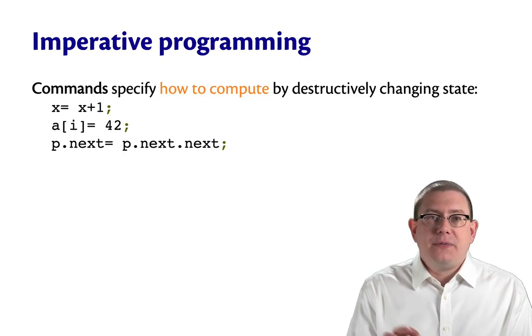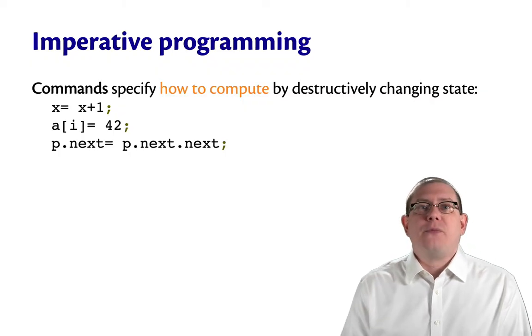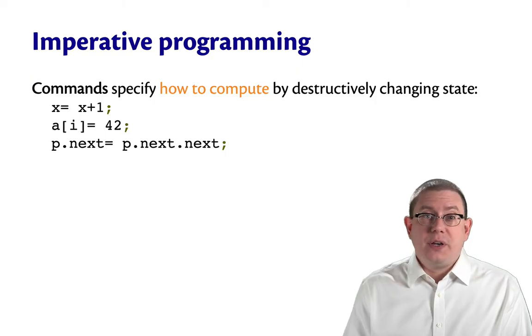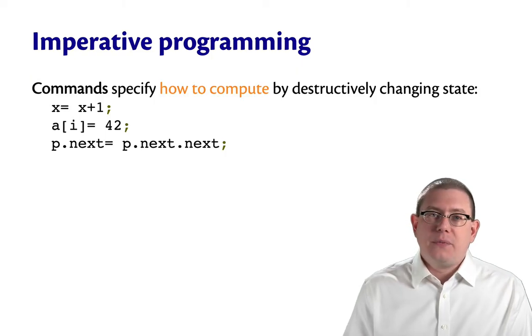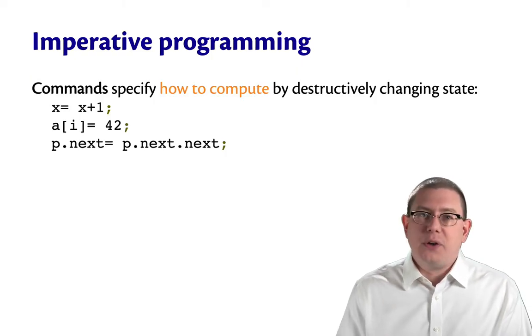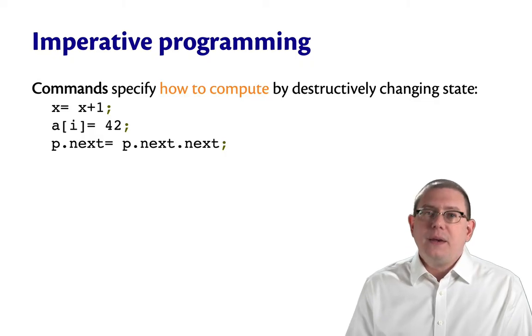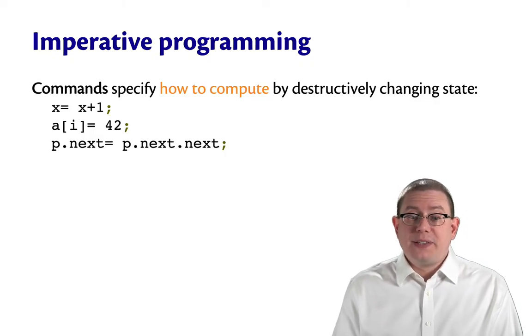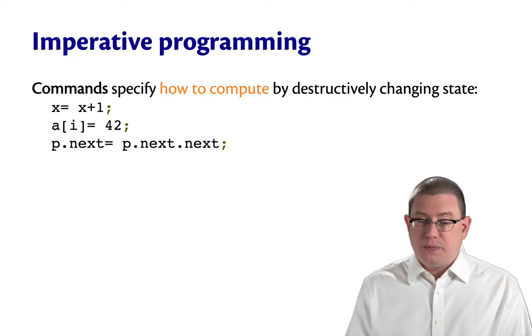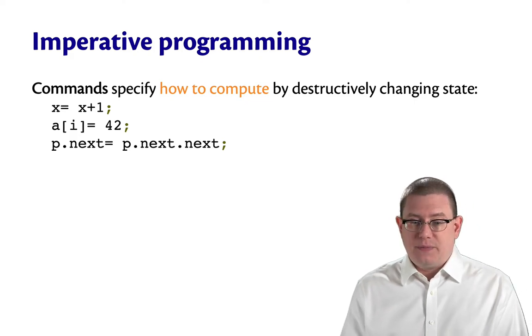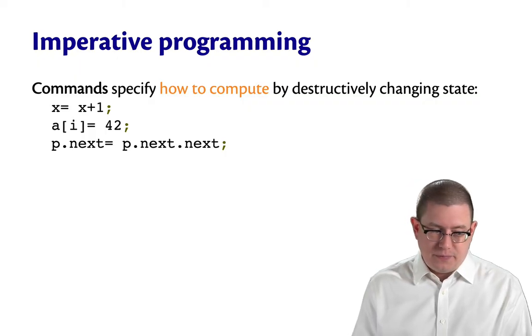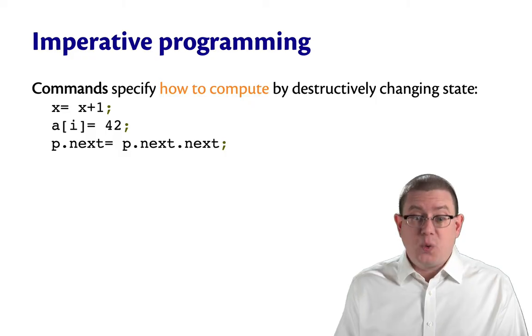And that's exactly what happens with imperative programming. Imperative is kind of the opposite end of the spectrum from functional. Imperative programming is what you've come to love and know through your classes that had Python or Java. In an imperative program, we have commands which specify how to compute by destructively changing the state. Here are three examples of such commands. X becomes X plus 1.